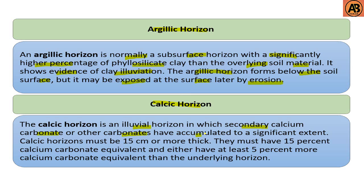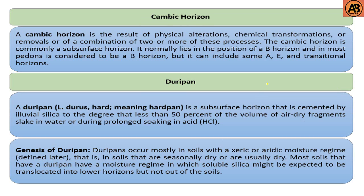The next one is the calcic horizon. The calcic horizon is an illuvial horizon in which secondary calcium carbonate or other carbonates have accumulated to a significant extent. The calcic horizon must be 15 centimeters or more thick, must have 15 percent calcium carbonate equivalent, and must have at least five percent more calcium carbonate equivalent than the underlying horizon.